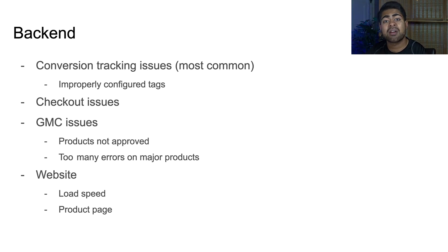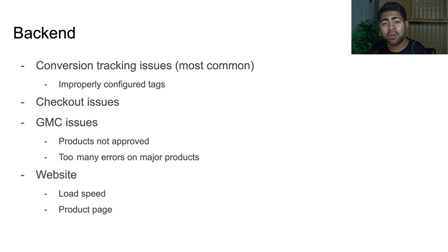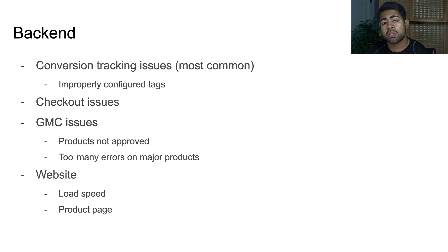Another issue on the Google Ads side are GMC — Google Merchant Center — issues. Some of those issues could be products not getting approved, maybe you're selling products that go against Google's policies and they end up disapproved, or maybe all your products are branded and every single one requires GTINs. If you have too many errors on your major products — the ones with the largest search volume — that could also be the reason why your ads are not shown and you're not getting the sales you'd like. So make sure you check the GMC to ensure there are no back-end issues.